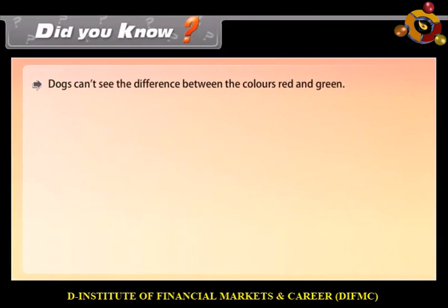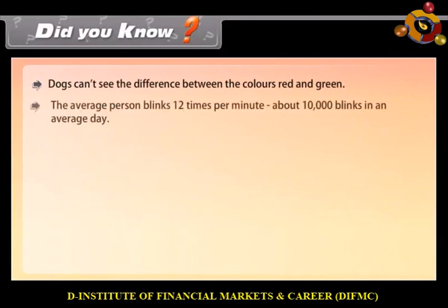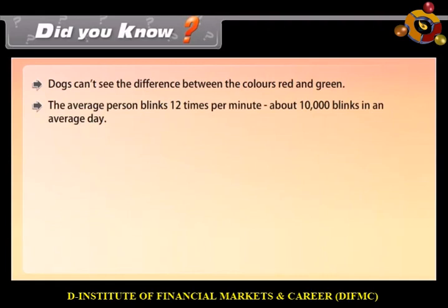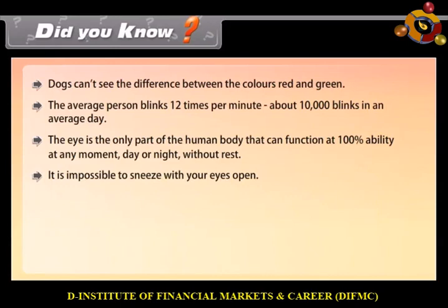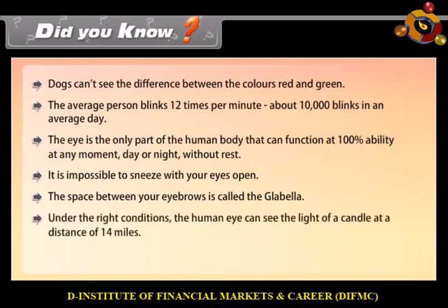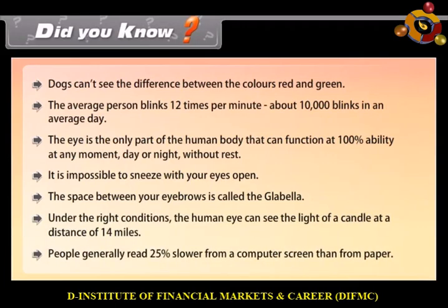Dogs can't see the difference between the colors red and green. The average person blinks 12 times per minute, about 10,000 blinks in an average day. The eye is the only part of the human body that can function at 100% ability at any moment, day or night, without rest. It is impossible to sneeze with your eyes open. The space between your eyebrows is called the glabella. Under the right conditions, the human eye can see the light of a candle at a distance of 14 miles. People generally read 25% slower from a computer screen than from paper.